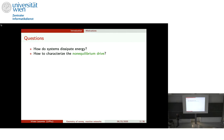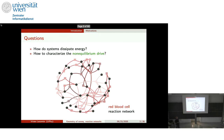I would like to describe some tools we have designed to depict how non-equilibrium arises in a chemical reaction network. The main question is: how do systems dissipate energy, and how can we characterize the drive in a geometrical manner? I will start by motivating this through reaction networks important in living matter, which require hypergraphs where every node is a species and every square is a reaction.